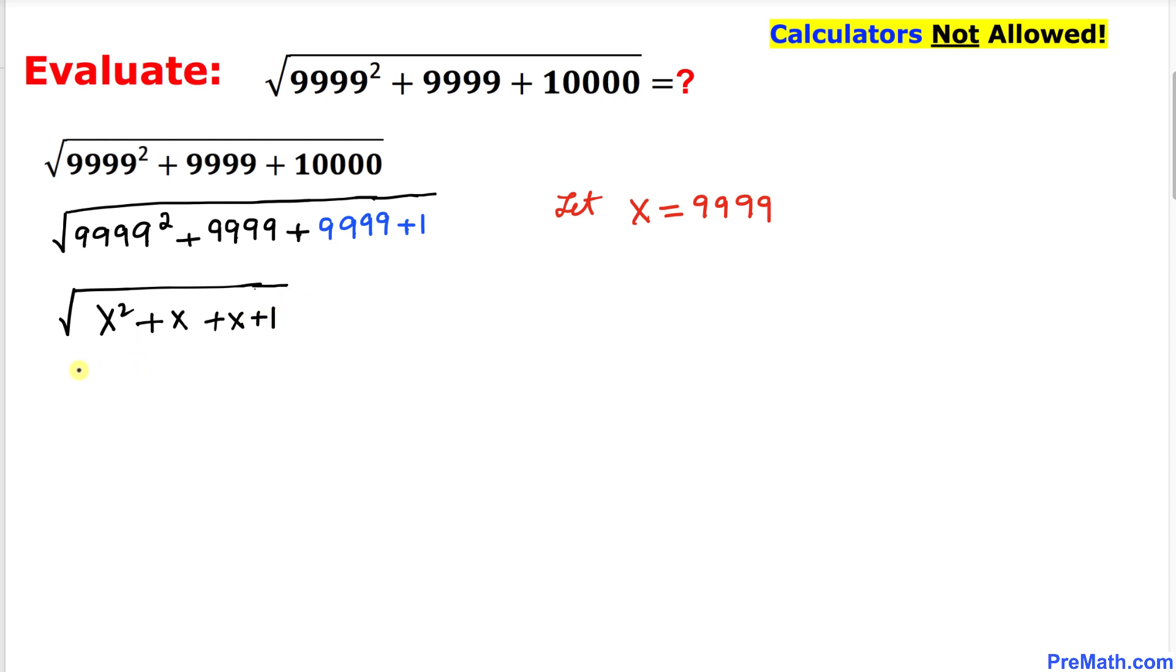Now let's go ahead and combine these like terms. So this could be written as x squared plus 2x plus 1, and now let's recall this famous formula: a plus b squared.